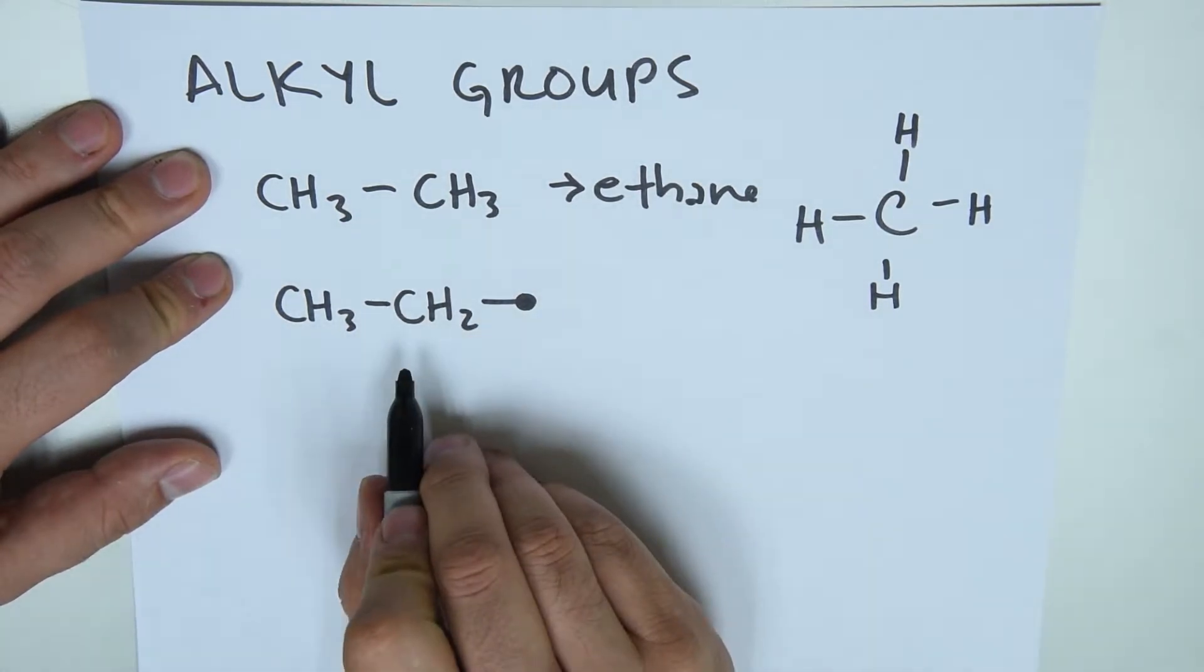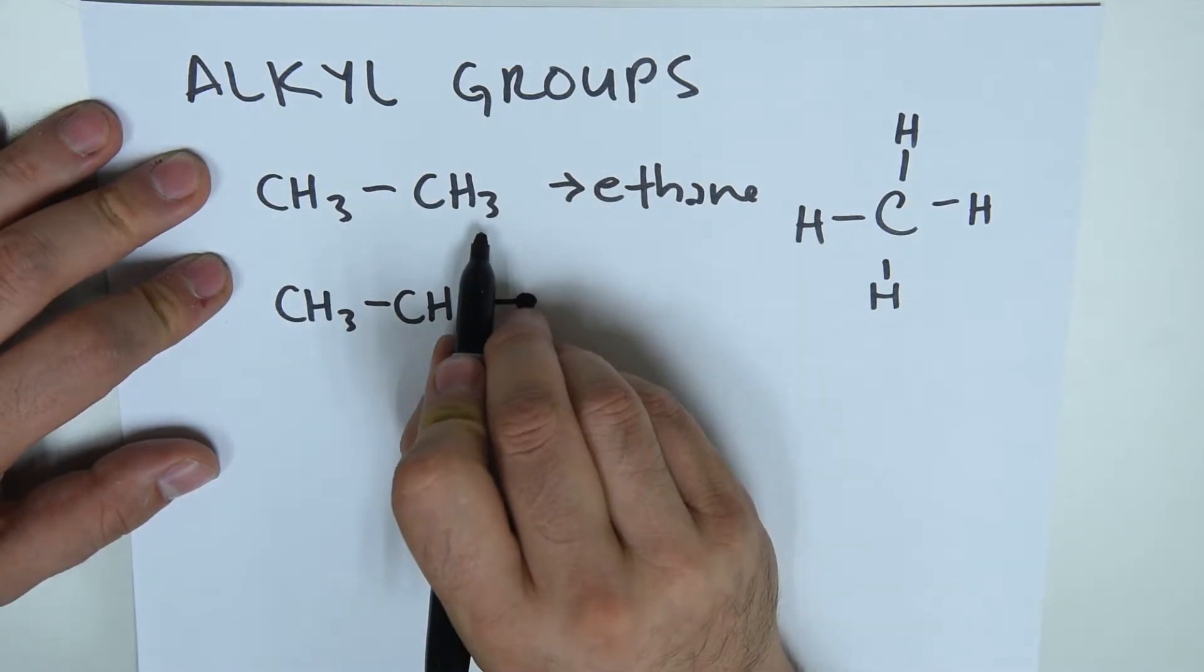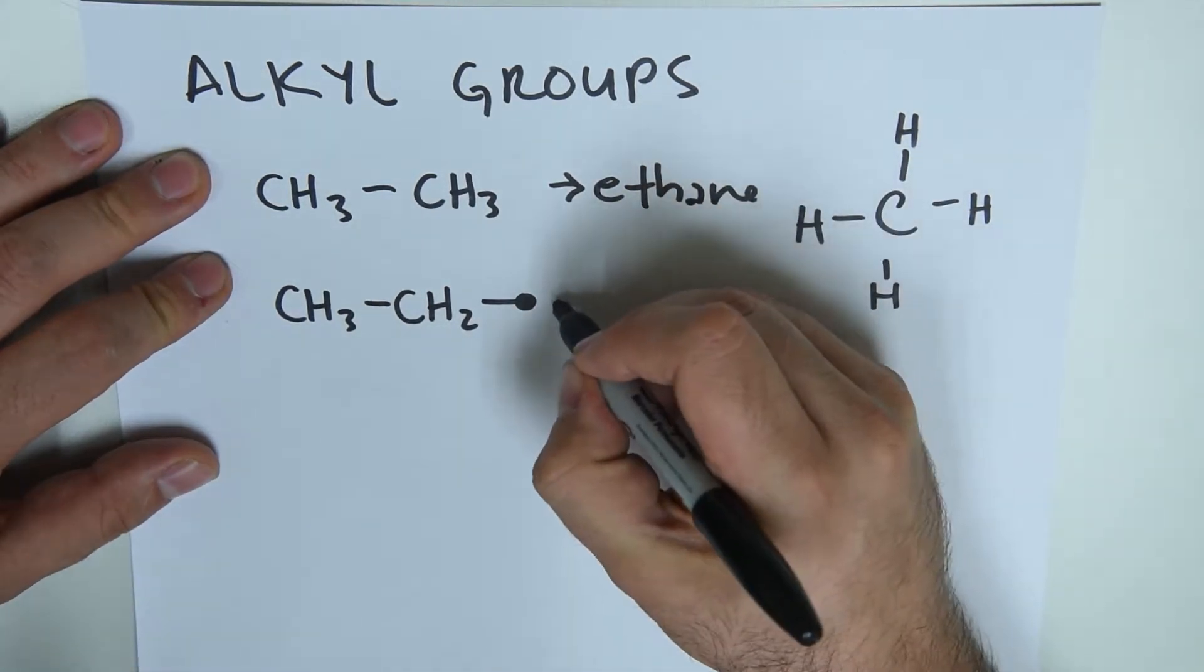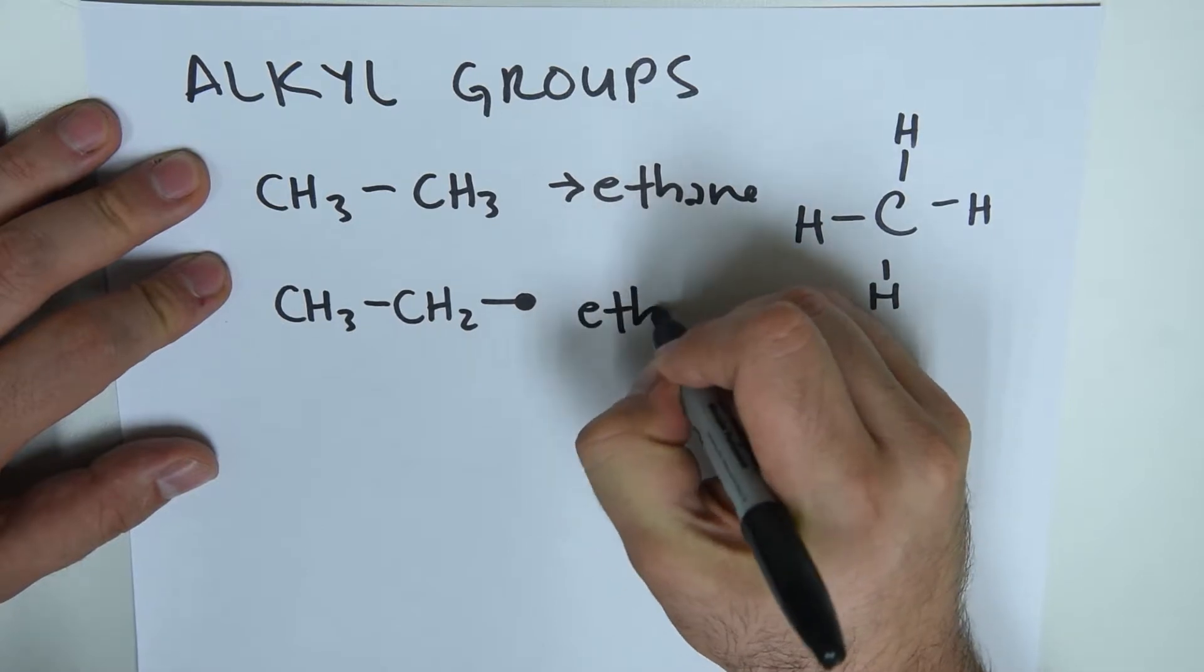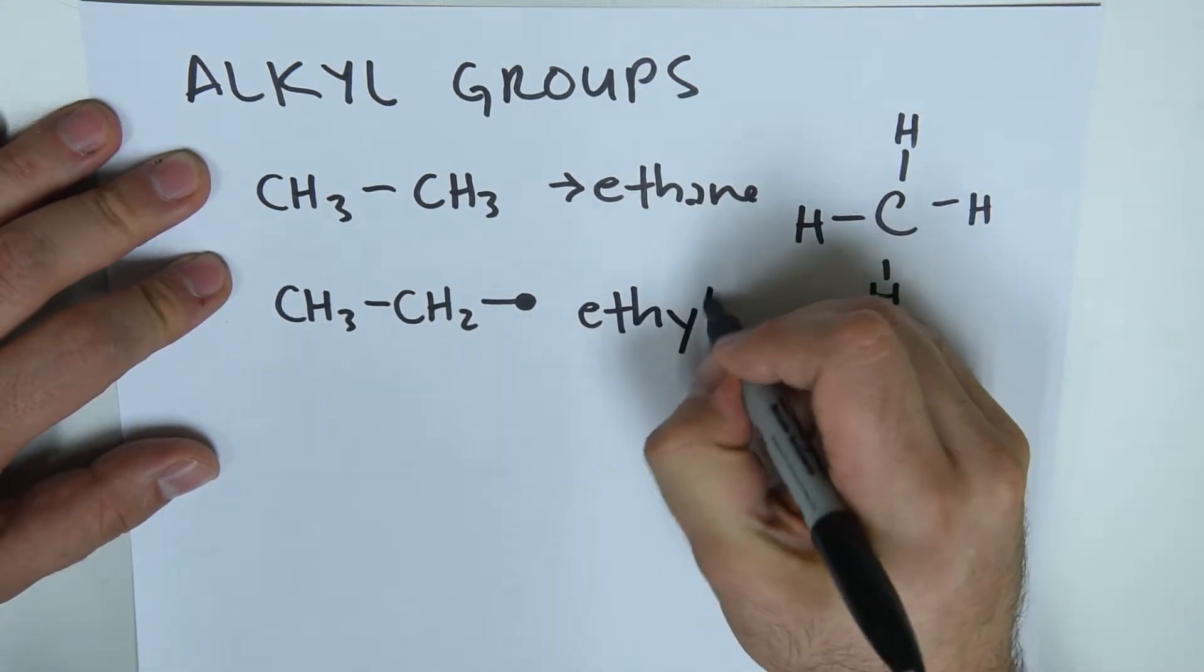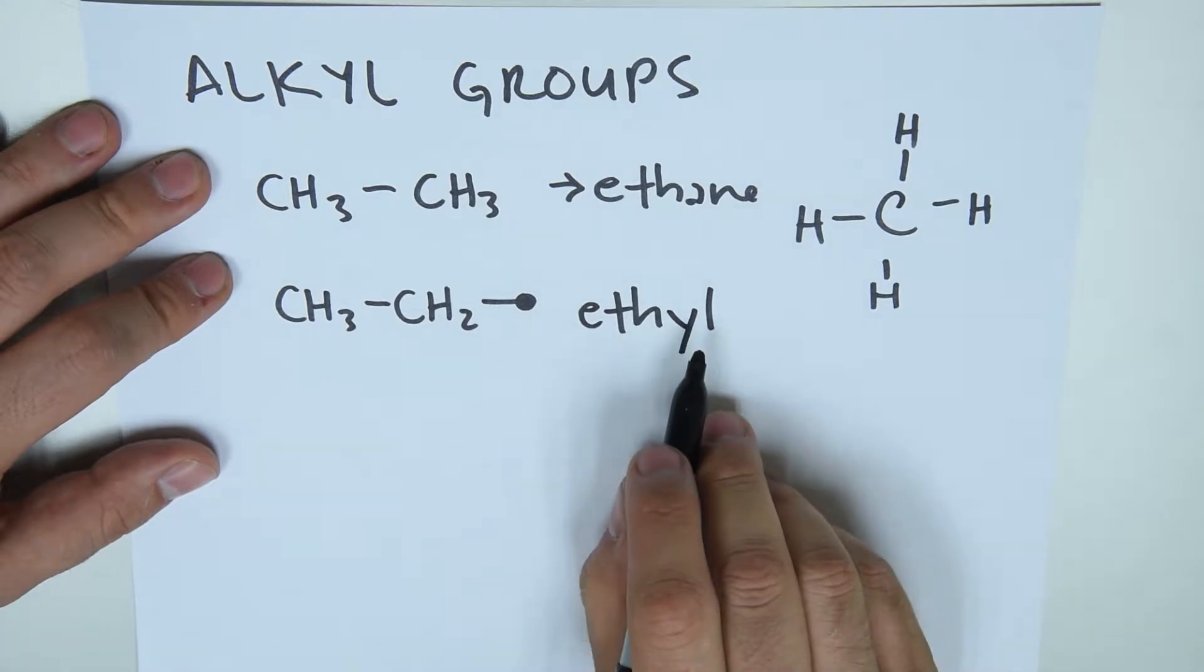How do we turn this into an alkyl group? I took away one of the hydrogens from ethane. I changed the name completely and this becomes ethyl, which means two, -yl, which means that it's missing one of the hydrogens and it wants to bond.